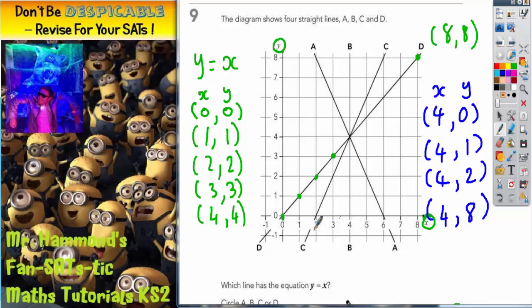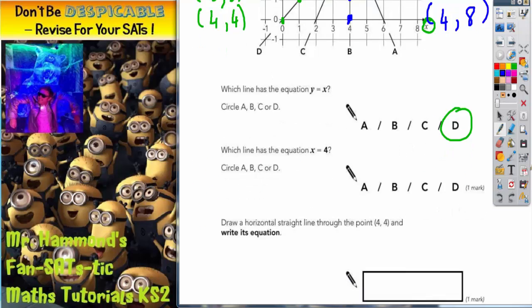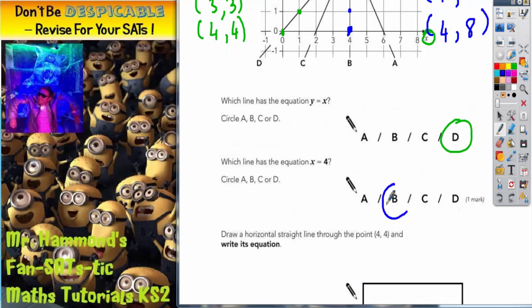4 across nothing up is there. 4 across 1 up is here. 4 across 2 up is here. And 4 across 8 up is all the way up the top there, which is there. Now, all 4 of those points lie on line B. There's line B. So the answer to the second part of the question is line B.